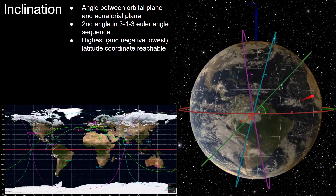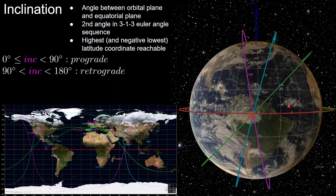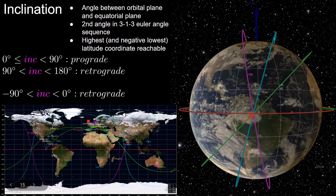A 75-degree inclination orbit reaches a highest latitude of 75 degrees, and this also applies to the negative lowest latitude — the lowest latitude this orbit reaches is negative 75 degrees south. Orbital inclination also tells us if an orbit is prograde or retrograde: 0 to 90 degrees is prograde, 90 degrees is polar, and greater than 90 degrees is retrograde. The purple orbit with an inclination of 100 degrees is retrograde. Sun-synchronous orbits are an application of these near-polar retrograde orbits. A 100-degree inclination is equivalent to negative 80 degrees — the value gives the angle between the equatorial and orbital plane, and the ground track confirms the highest latitude is 80 degrees.